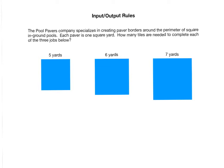Each of these three here are square pools — this one is five yards on each side, the next is six yards on each side, and so on. The tiles are one square yard each. So, for example, because the sides are five yards long, there would be five tiles along this side.